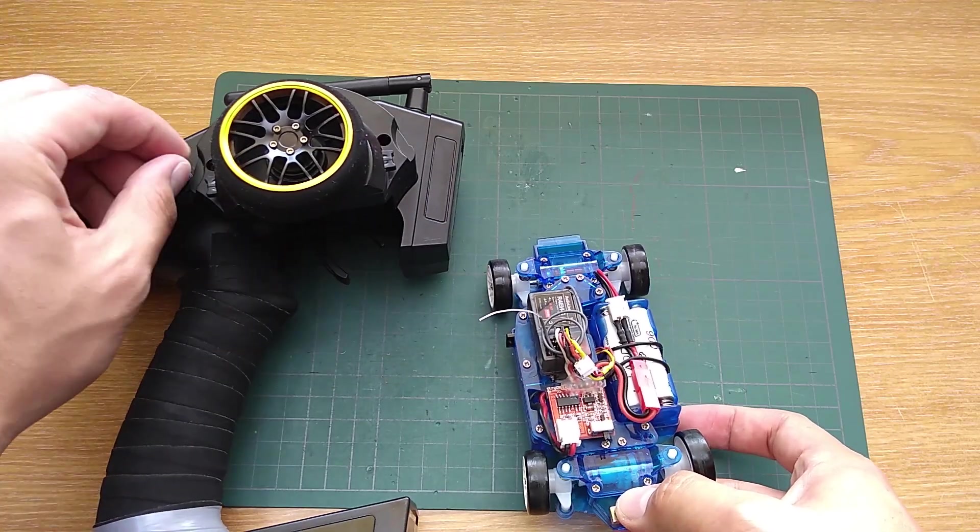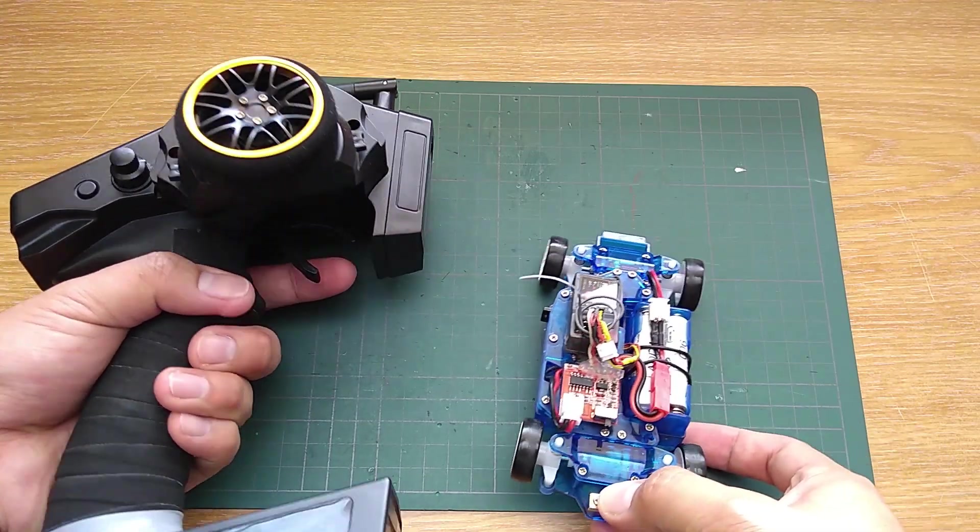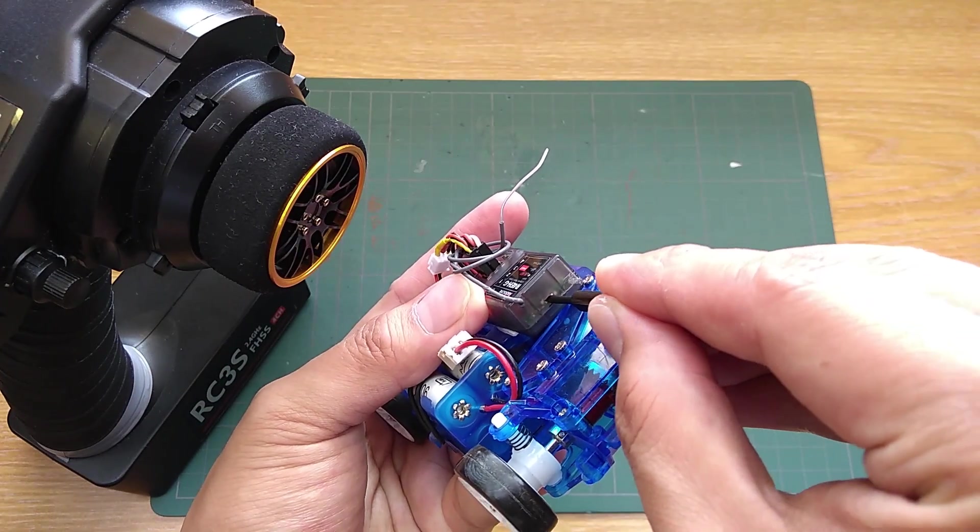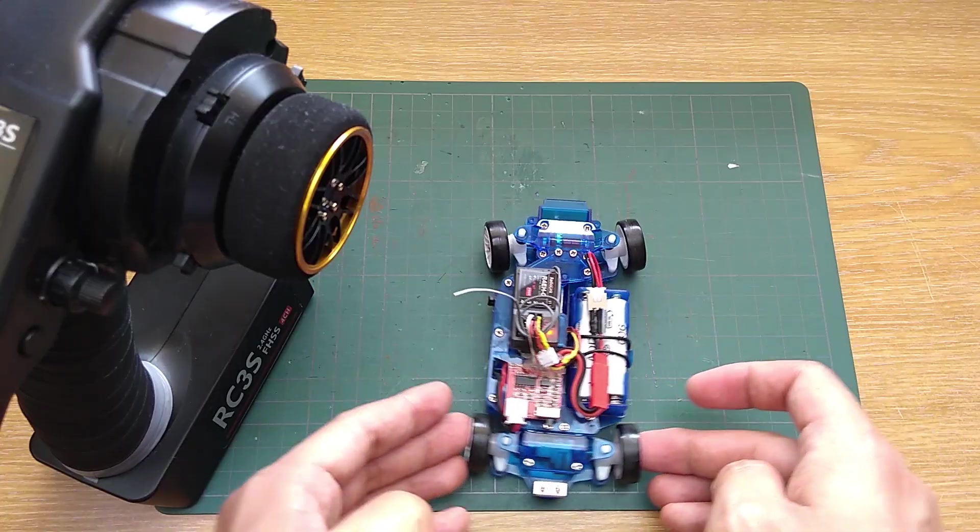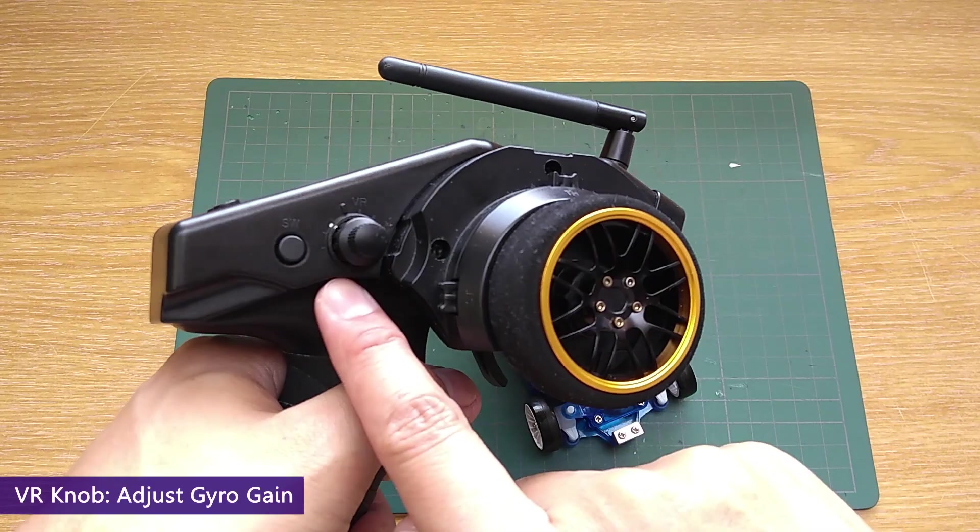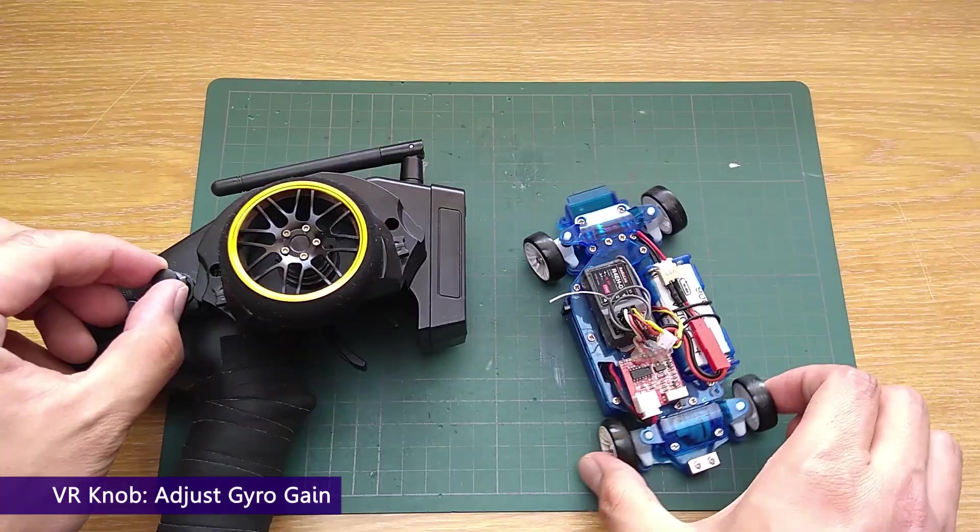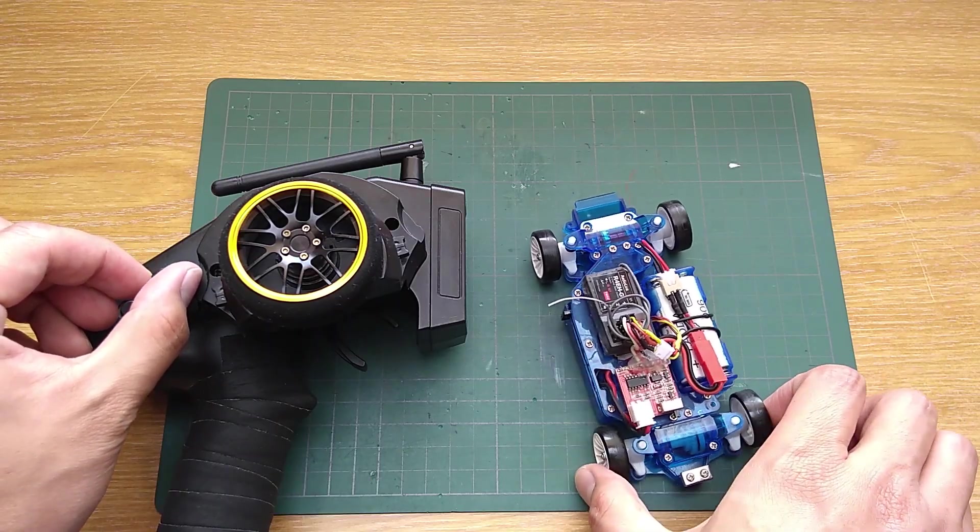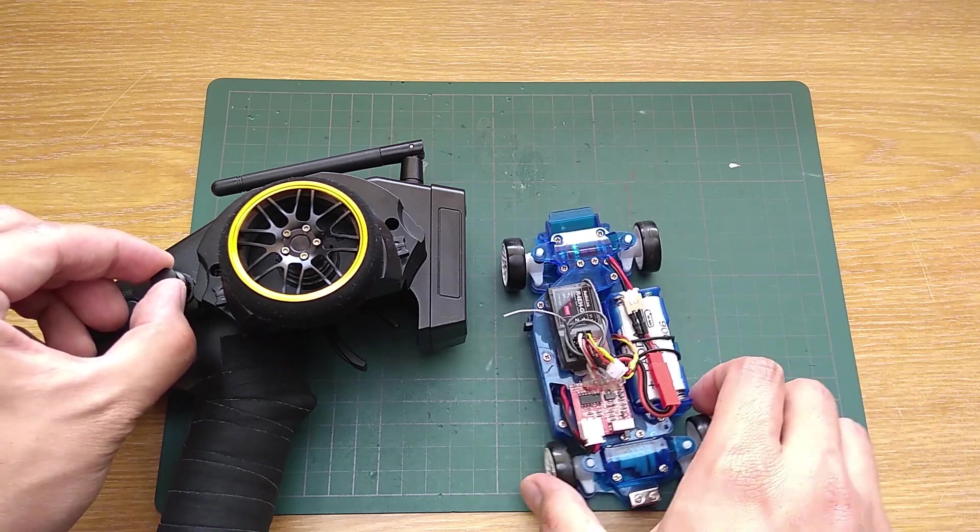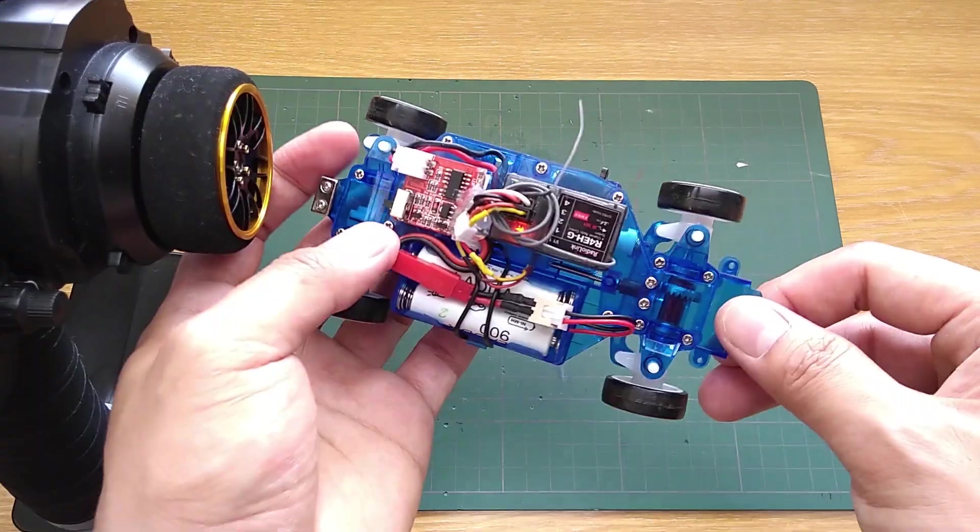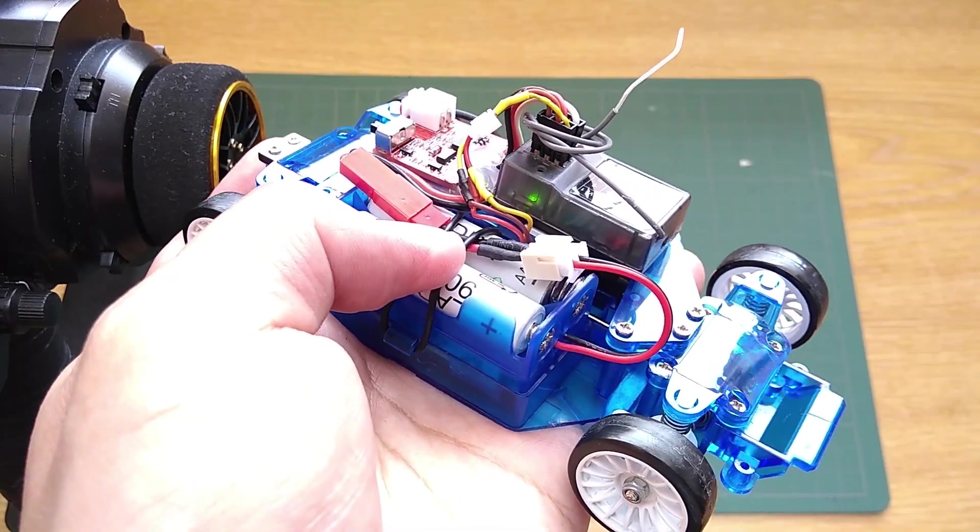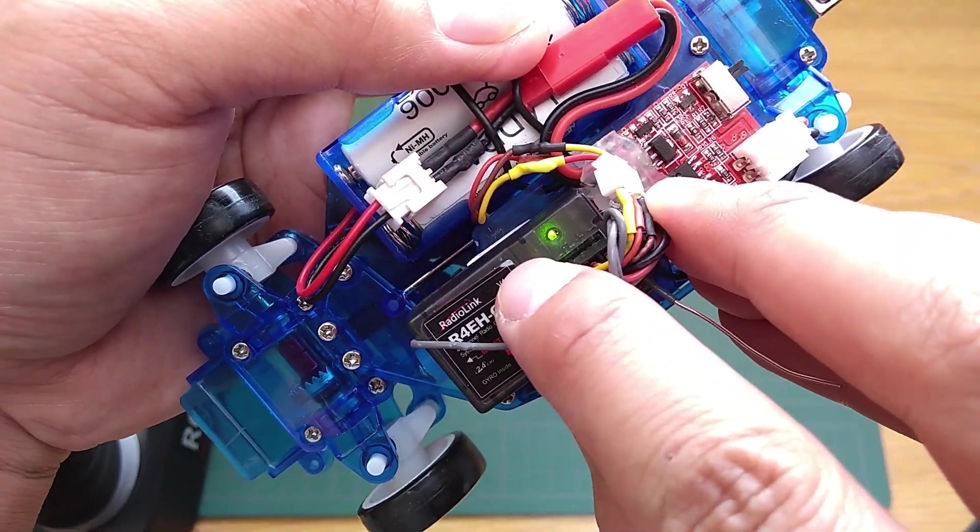To adjust the gyro gain, use the VR knob. As you can see here, higher gain gives me more counter-steer. If the gain is too high, the car will understeer. So don't use too much gain, otherwise you won't be able to drift. Personally, I don't use gyro. So I turn it off by clicking it 3 times. And the light turns green, indicating the gyro is off.